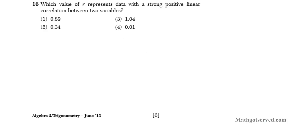Let's take a look at question 16. It says, which value of r represents data with strong positive linear correlation between two variables? The whole idea of correlation ranges from perfect negative correlation to perfect positive correlation.